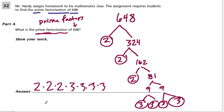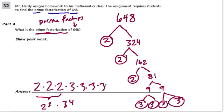In this problem they also asked for this in exponential form. So you would write 2 to the 3rd power, which means 2 times 2 times 2, times 3 to the 4th power, which means 3 times 3 times 3 times 3.